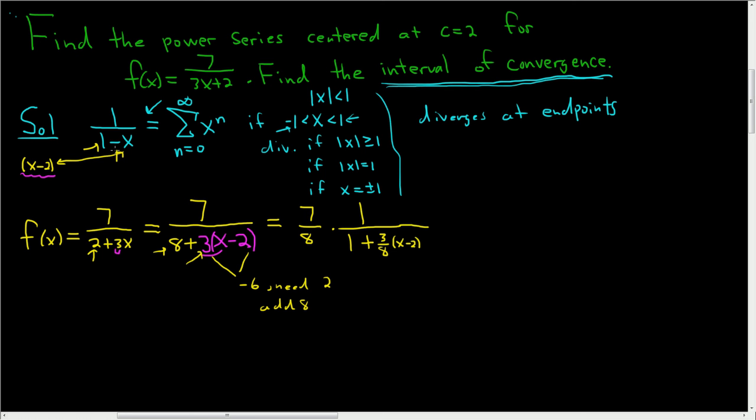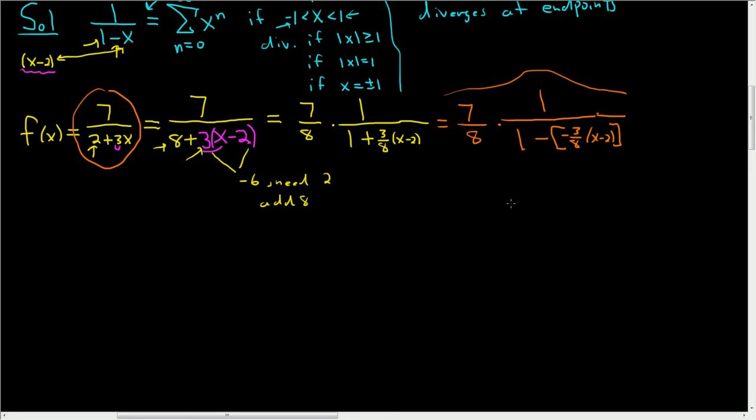We need to have a minus sign. We don't have that, so we can put it there and fix it. So this is 7 over 8. Fun stuff. All divided by 1 minus, and then I'm going to use a bracket, minus 3 over 8, x minus 2 bracket. So going from here to here in one step, if you can do it, you're really smart. I can't. Hopefully that made some sense.